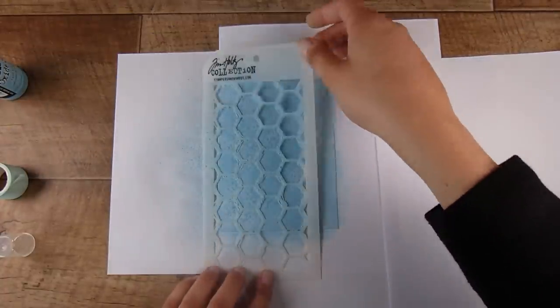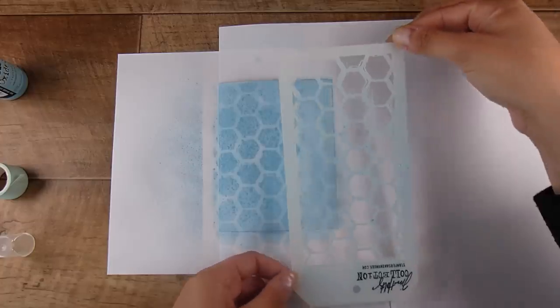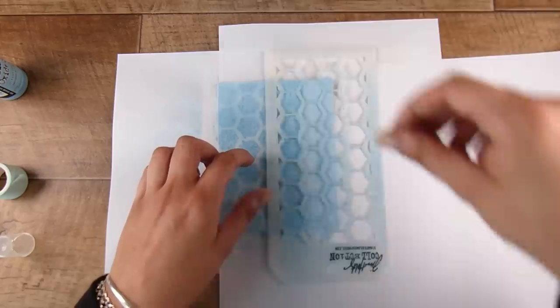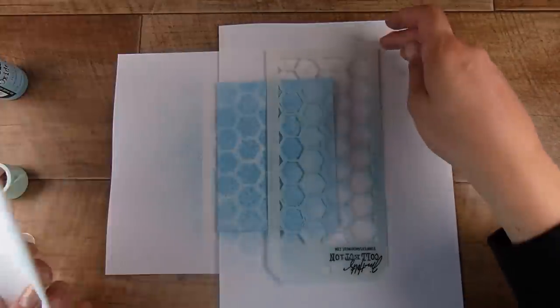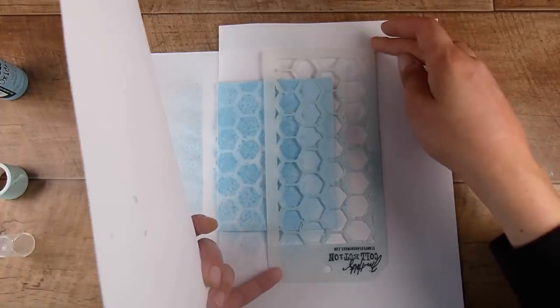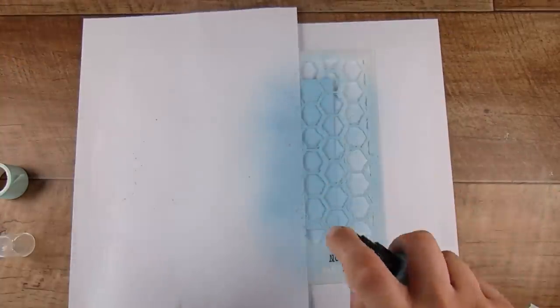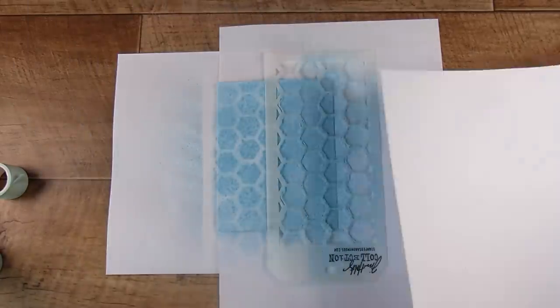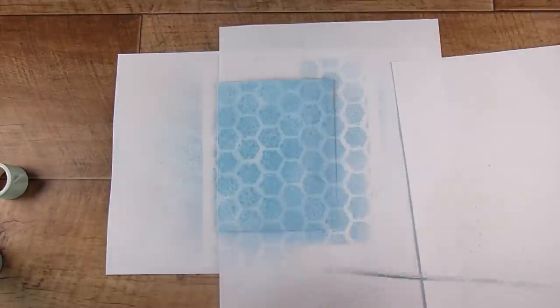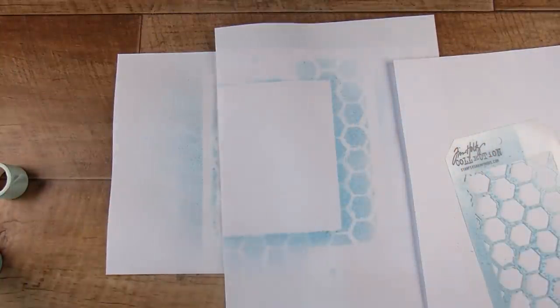I'm giving it a very light misting, coming in with Tumbled Glass spray on top of Tumbled Glass ink so I really do just want it to be a relatively subtle look. I turn the stencil upside down so I'm not going to get ink everywhere. I put that extra piece of paper over there because I don't want any harsh lines from the edges of the stencil.